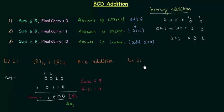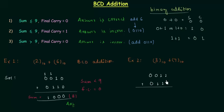Example number 2: we have to perform the addition 3 plus 7. 3 is represented by 0011 and 7 is represented by 0111. 1 plus 1 is 0 with carry equal to 1; 1 plus 1 plus 1 is 1 with carry equal to 1; 1 plus 0 plus 1 is 0 with carry equal to 1; and finally we have 1. So the sum is equal to 1010.